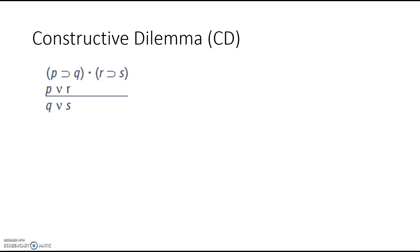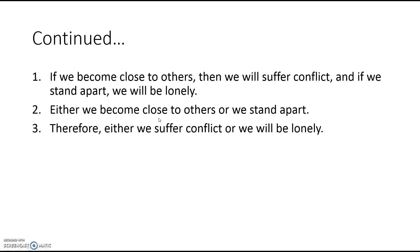Our final implication rule is the constructive dilemma. Premise one: if P then Q, and if R then S. Premise two: either P or R. Conclusion: therefore either Q or S. Here's the hedgehog's dilemma: If we become close to others, we will suffer conflict; and if we stand apart, we will be lonely. But either we become close to others or we stand apart — no other option. Therefore, either we will suffer conflict or we will be lonely. Even though this is valid, hopefully it's not sound. Those are your five implication rules — learn them, love them, live them, and watch out for fallacies.